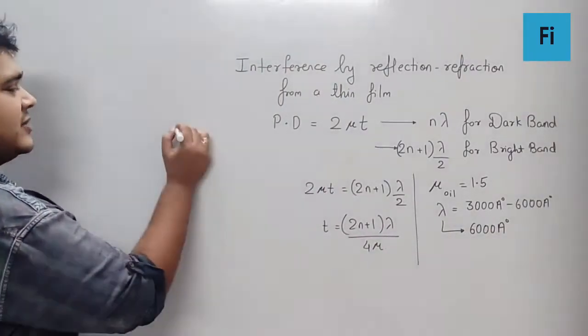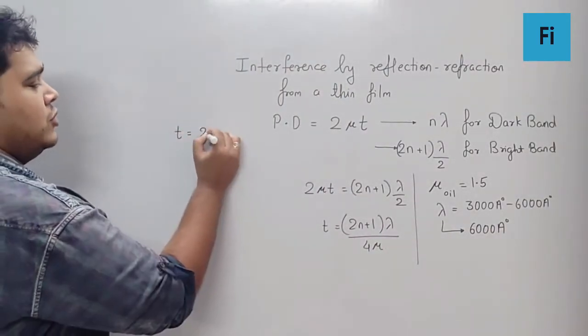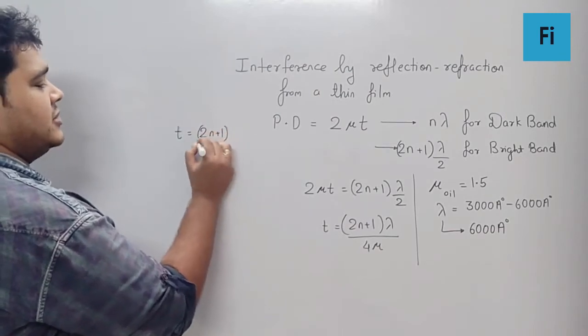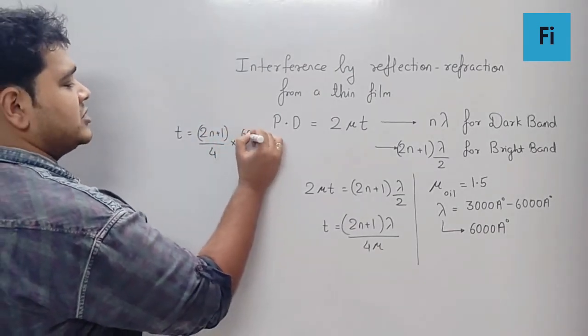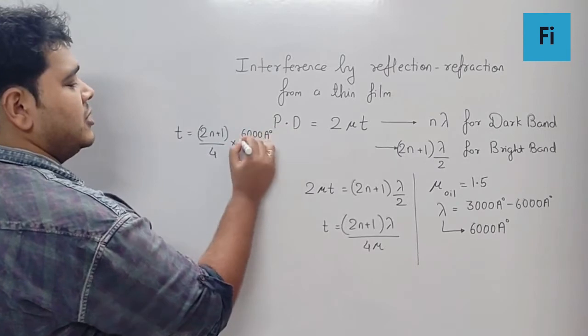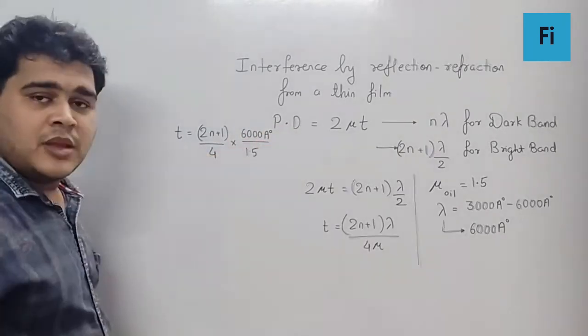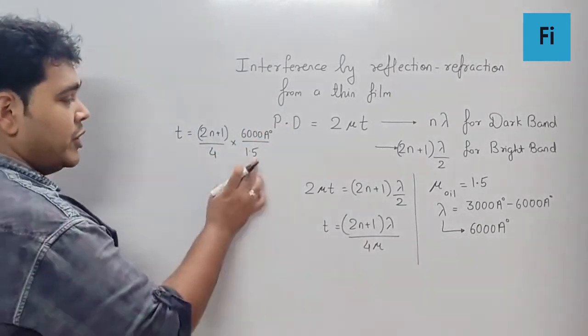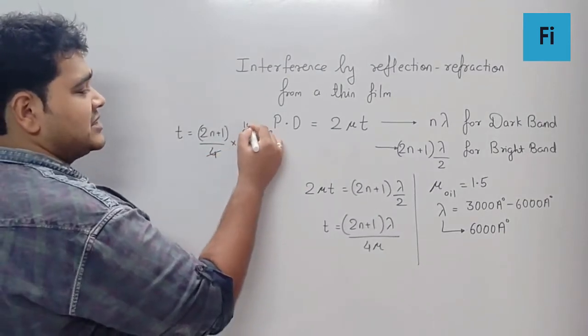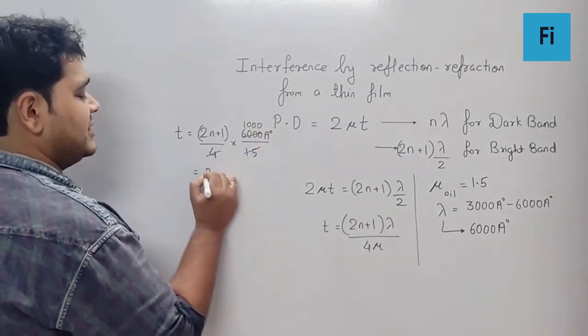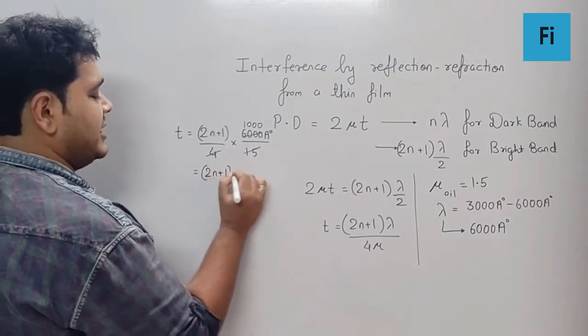So if I use that, I get the thickness is equal to (2n+1) divided by 4 into 6000 Å upon 1.5. Now if you are aware, 1.5 into 4 is 6, which cancels with this as 1000. So definitely this is going to be (2n+1) times 1000 Å.